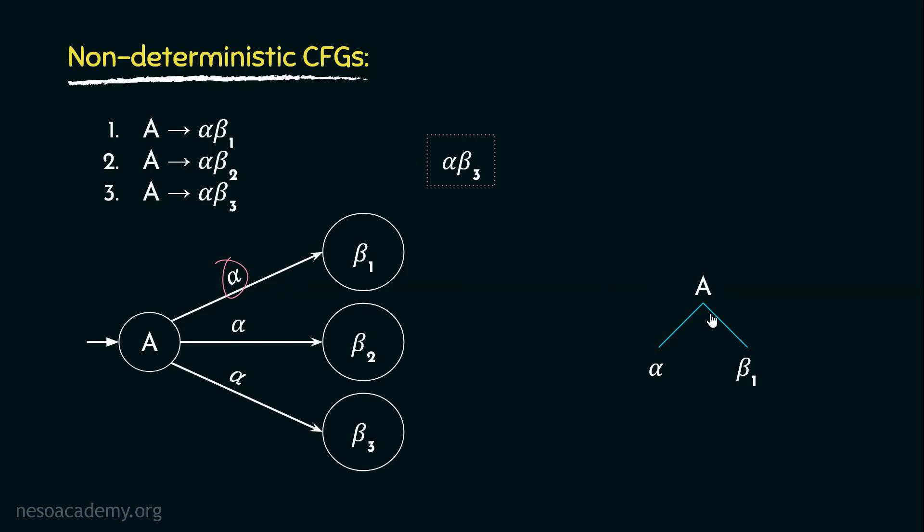Now during the traversal when the machine would reach here, that is β₁, it would understand that this is not the desired derivation, so it will backtrack to A. Next the machine would select the second rule and would derive α again, thereafter it would derive β₂. This time seeing this α, the machine ended up in this state. While fetching the yield when the machine reaches here, it would realize that this again is not the correct derivation, so the top-down parser would again backtrack to A.